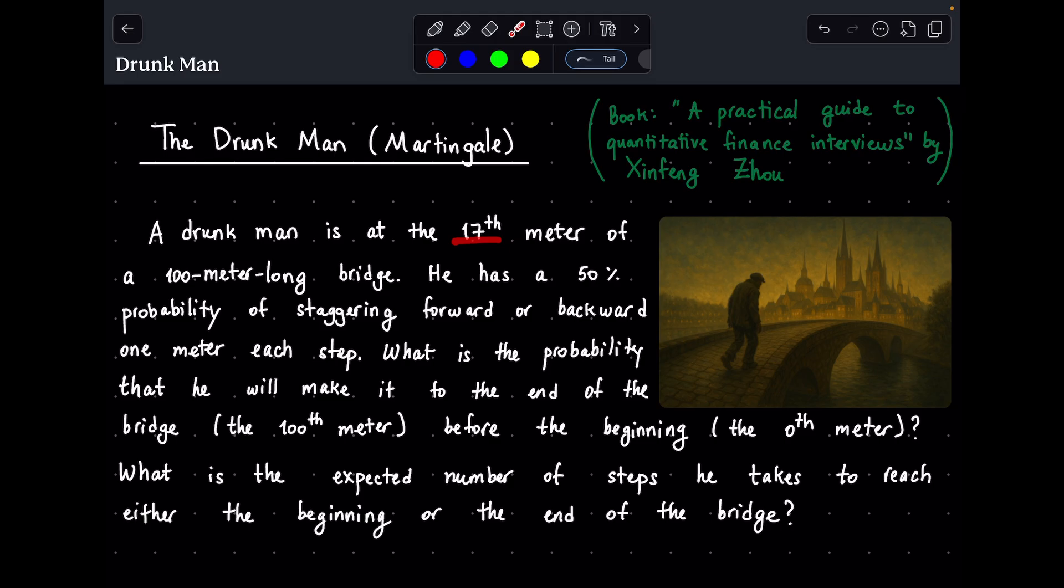A drunk man is at the 17th meter of a 100 meter long bridge. He has a 50% probability of staggering forward or backward one meter each step. What is the probability that he will make it to the end of the bridge, the 100th meter, before the beginning, the 0th meter? What is the expected number of steps he takes to reach either the beginning or the end of the bridge?